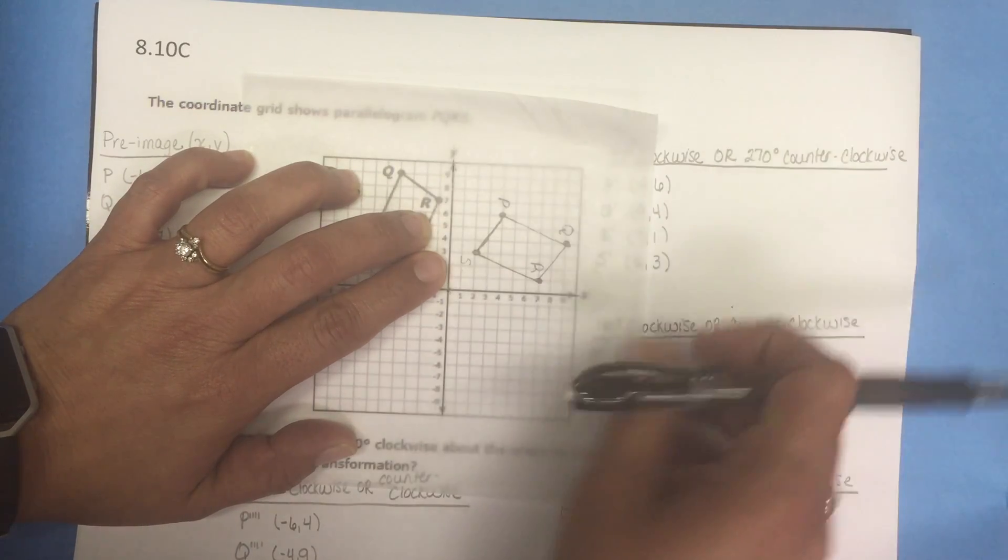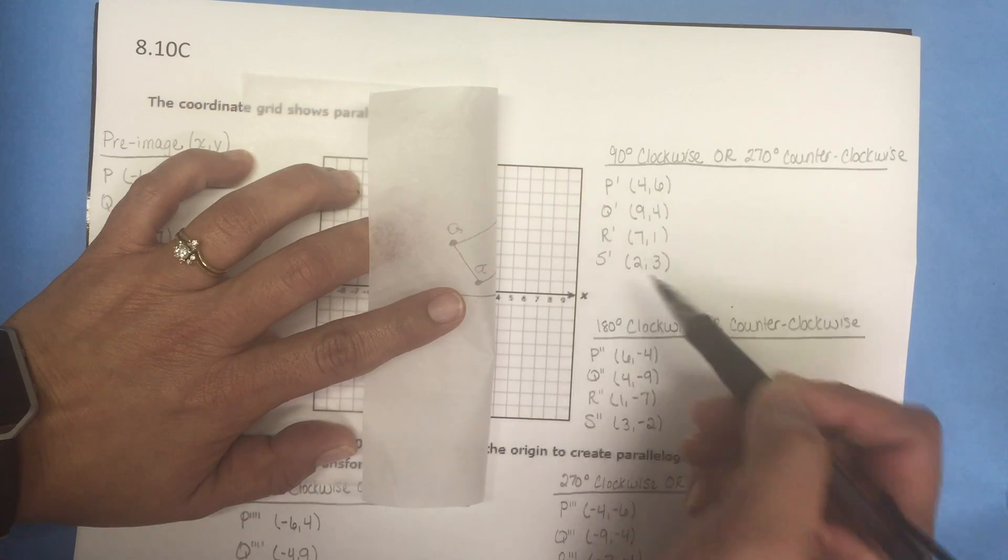I've taken a moment to list the coordinates of that rotated image here. P is (4, 6), Q (9, 4), R (7, 1), S (2, 3).